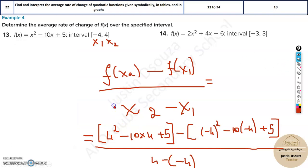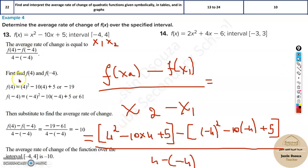Your answer is minus 10. You can do it differently using the same formula: f(x2), that is 4, minus f(x1), that is minus 4, divided by 4 minus minus 4. But they have solved f(x) individually—finding f(4) and f(minus 4) separately—and then put it in the formula. The average rate of change over this interval is minus 10.